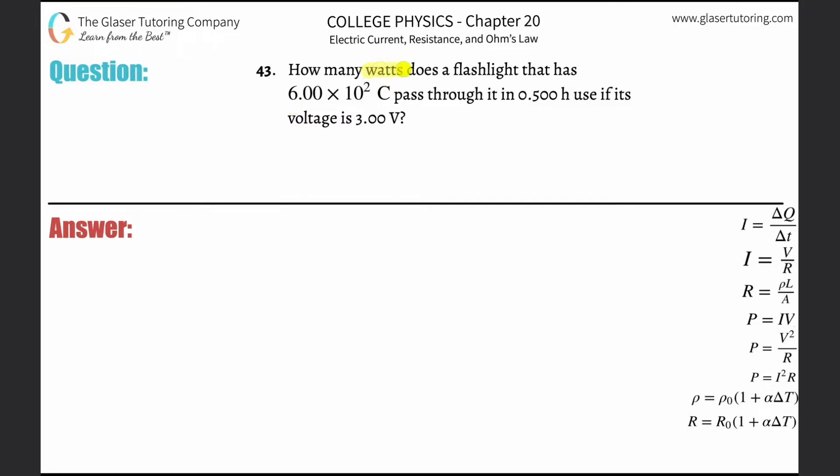Number 43, how many watts does a flashlight that has six times 10 to the two Coulombs pass through it in 0.5 hours use if its voltage is three volts?